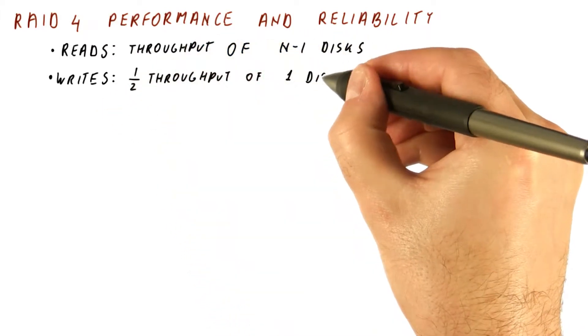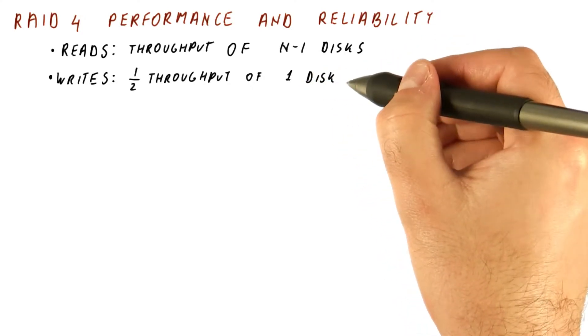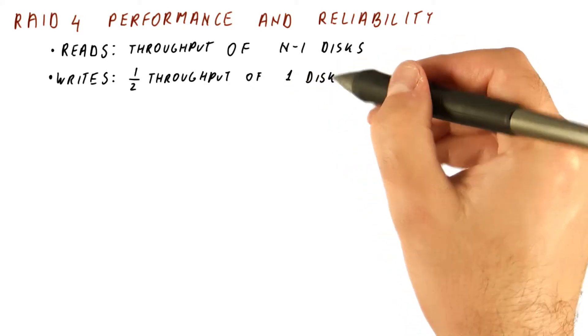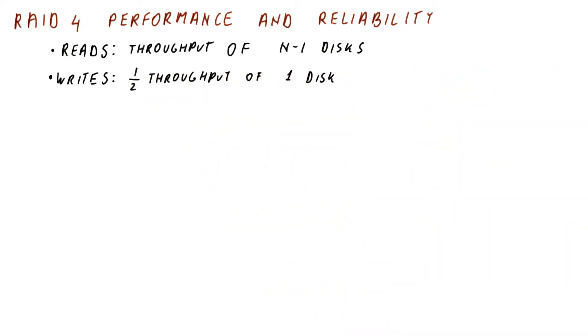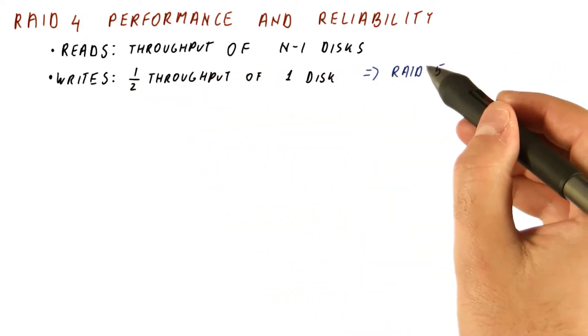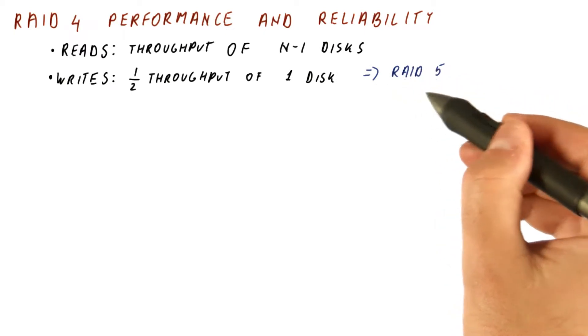So we are getting only one half of the throughput of a single disk, because the parity disk needs two accesses for every write. This is a significant disadvantage, and we will see that this is really the primary reason why we need RAID5.